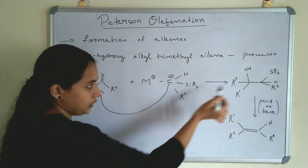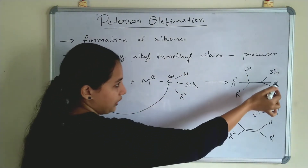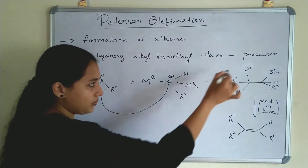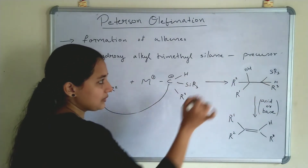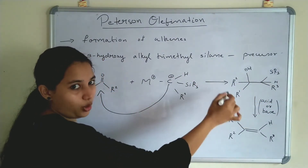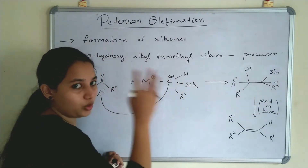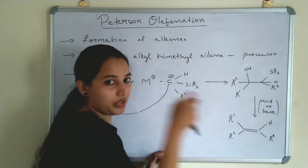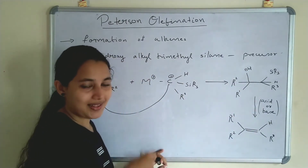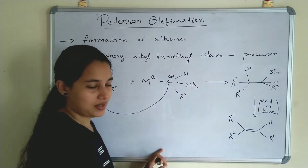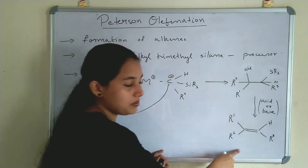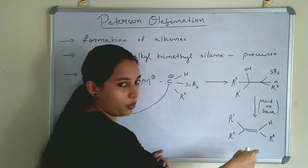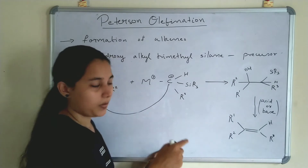The compound has R3, hydrogen, and an alkylsilane group. This is the precursor of Peterson Olefination. To this precursor we are adding acid or base, so the product depends upon the acid or base.